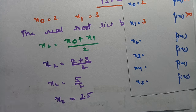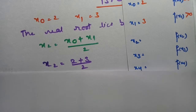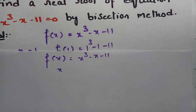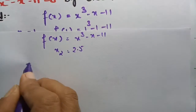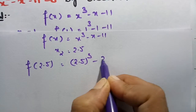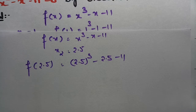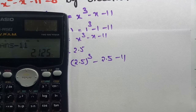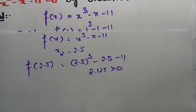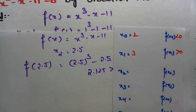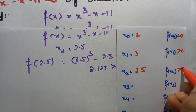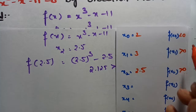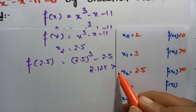We check f(x₂) = f(2.5) = 2.5 cubed minus 2.5 minus 11, which is a positive value. Since x₂ = 2.5 gives a positive value and x₀ = 2 gave a negative value, we need different signs. So for the next bisected value x₃, we use x₀ and x₂.